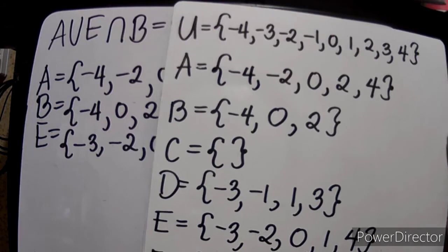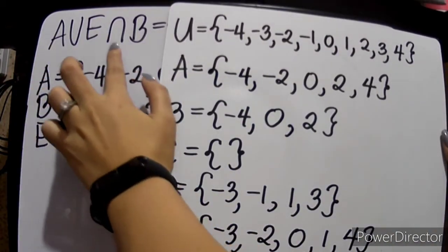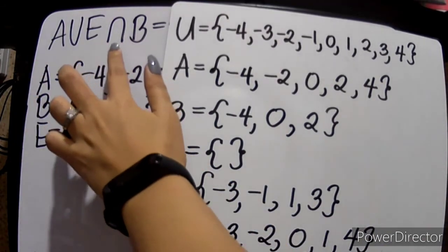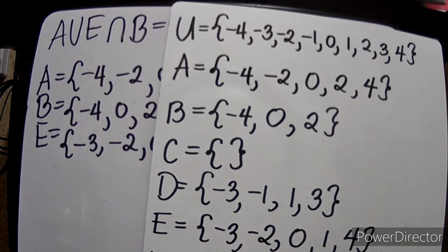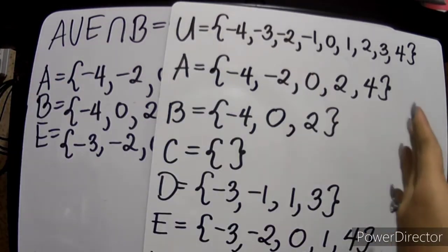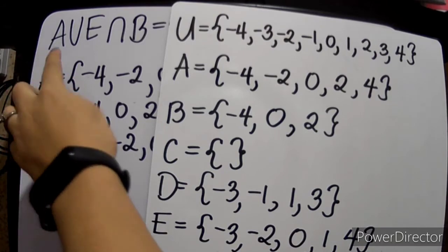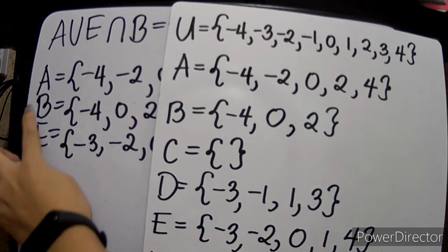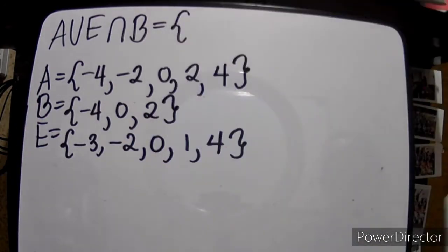Another example: (A union E) intersection B. We have both union and intersection here. Following order of operations from left to right, we work with sets A, E, and B. We don't need the universal set since there's no complement operation.